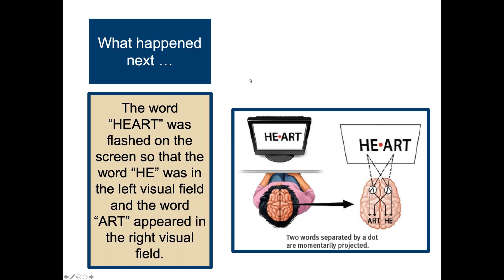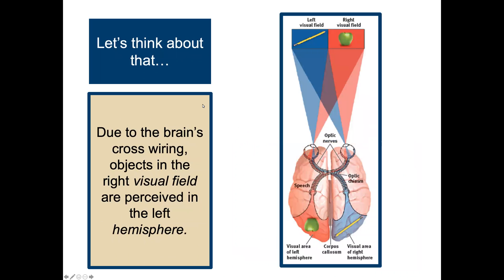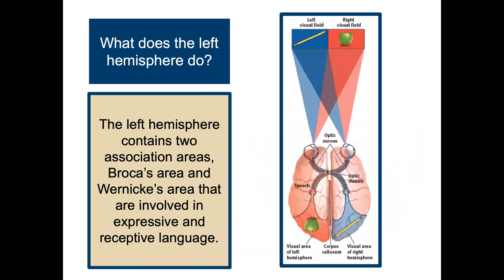Patients were then asked to tell Gazzaniga what they had seen, and they reported seeing the word 'art.' Due to the brain's cross-wiring, objects in the right visual field are perceived in the left hemisphere. The left hemisphere contains two important association areas — Broca's area and Wernicke's area — both involved in language.